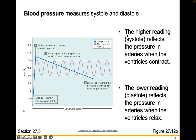Blood pressure involves systole and diastole. The higher reading, systole, reflects the pressure in the arteries when the ventricles contract. The lower reading, diastole, reflects the pressure in the arteries when the ventricles relax.